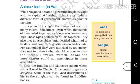Gana is used for a group that has many members. Sangha means organization or association. In a Gana or Sangha, there were not one but many rulers. Sometimes even thousands of men ruled together, and each one was known as Raja.